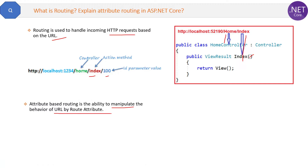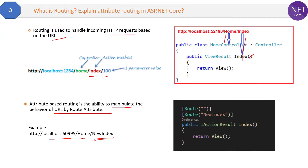For example, this is the URL — this is the localhost, this is the home which should be the controller, and this should be the action method new index. But if we look at the code here, in the code we do not have any new index action method; rather we have the index action method. So how will we map this new index with this index action method? For that we will use the route attribute, and inside this you can see a new index parameter has been mentioned. So that will make sure that this request goes to this action method. That is the role of the route attribute, and that is what we call attribute-based routing in ASP.NET Core.